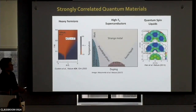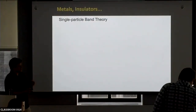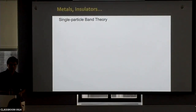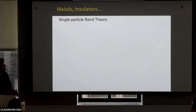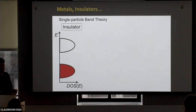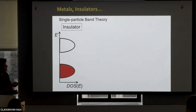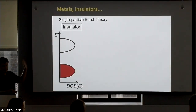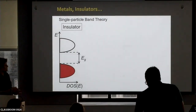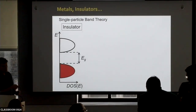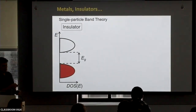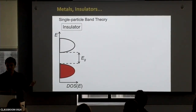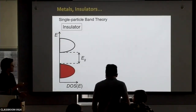Just to remind everyone what single-particle physics tells us about the electronic properties of materials: from a single-particle point of view, you basically have two behaviors. If you have a system with one band completely occupied and the next band completely empty with a band gap in between, this is an insulator — there are no available energy states at small energy where electrons can be excited via an electric field or temperature to conduct electricity.